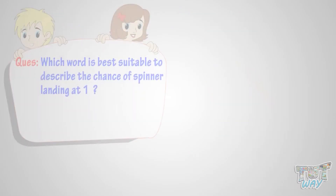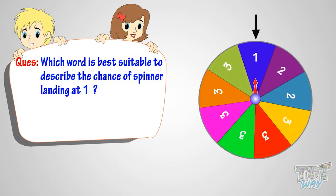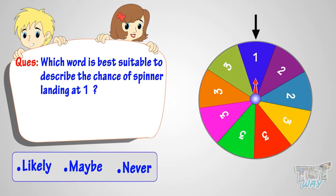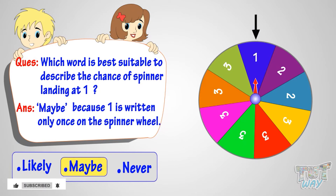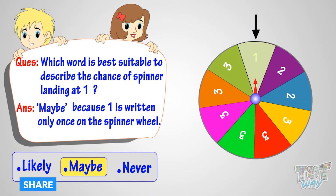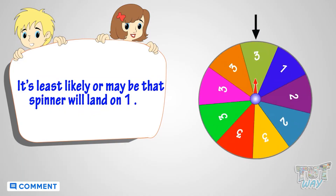Which word is best suitable to describe the chance of spinner landing at one? Likely, maybe, or never? The answer is maybe, because one is written only once on the wheel. So it's least likely — or maybe — that the spinner will land on one.